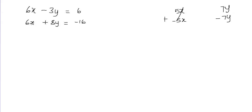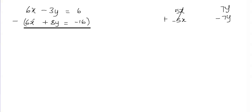To eliminate the x variable, I'll subtract the equations — first equation minus second equation. When you subtract, you have to be careful because you need to distribute the negative sign inside the parentheses. I'll put parentheses around the second equation and make sure to distribute that negative sign inside.